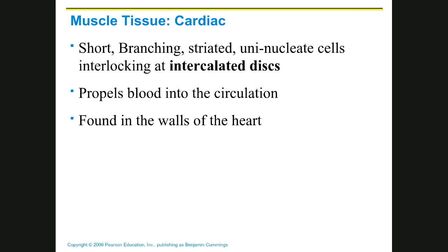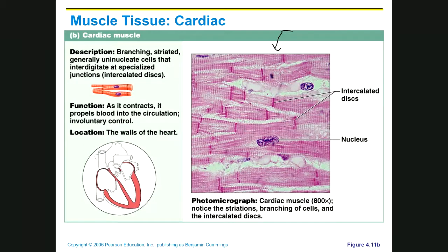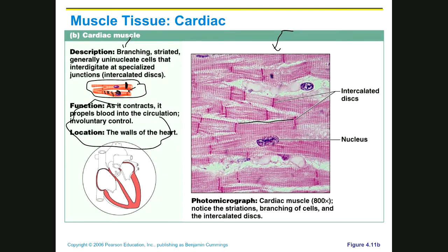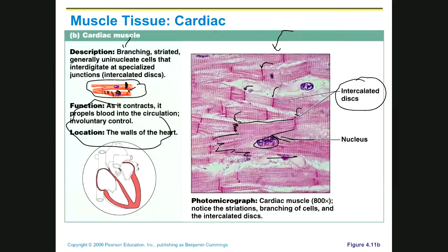Here's our box with the photomicrograph, description, diagram, and function and location. You can see how the cells are divided or split, you can see the little stripes, one nucleus, and then there's the intercalated disc. Coming over to the photomicrograph, the cells are going at weird angles, so they've been cut at weird angles. You can see how this cell is divided, there's the nucleus, and here's the intercalated disc. This is the only tissue with intercalated discs, so if you see those, it has to be cardiac muscle.